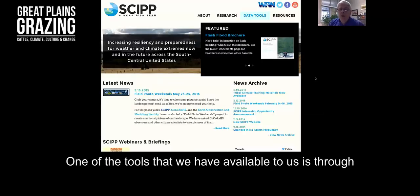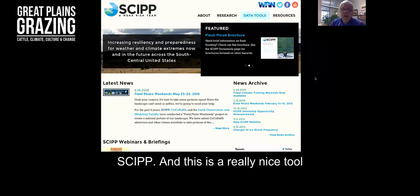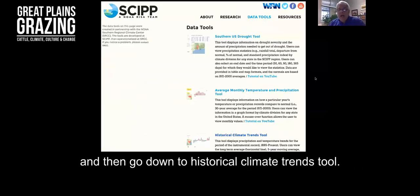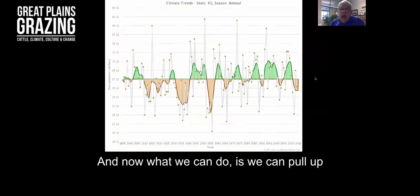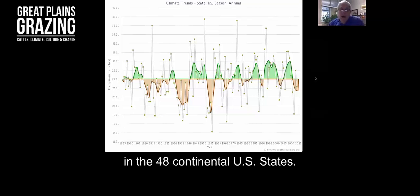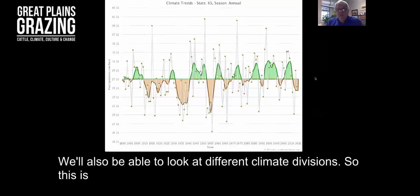One of the tools that we have available to us is through SKIP. This is a really nice tool from this group. We can go to the data tools where the blue box is, and then go down to historical climate trends tool. Now what we can do is pull up the same chart that we looked at for Oklahoma, but for any state in the 48 continental US states. We'll also be able to look at different climate divisions.